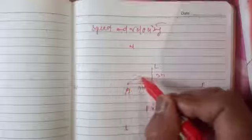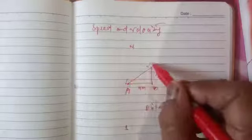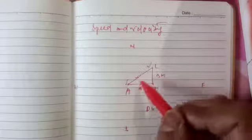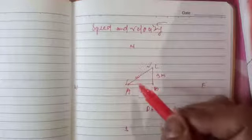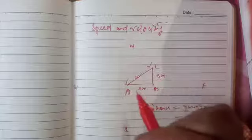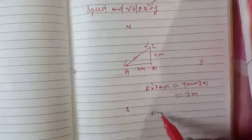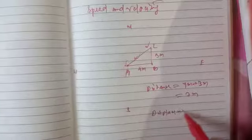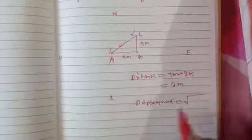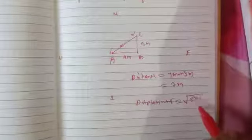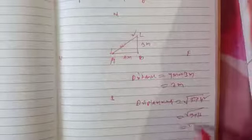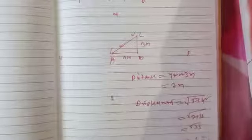Now, what is the displacement of the object in this case? Displacement is the path covered by the object from the initial position to the final position, with direction. If we join by a straight line the initial position and the final position, that will be the displacement. We can find it using the Pythagorean theorem, since displacement is the hypotenuse. So displacement equals the square root of 3² plus 4², which is 9 plus 16 equals 25, so displacement is 5 meters.